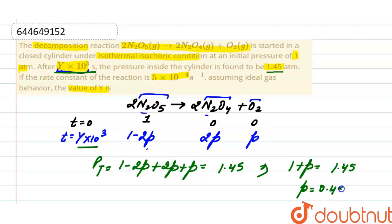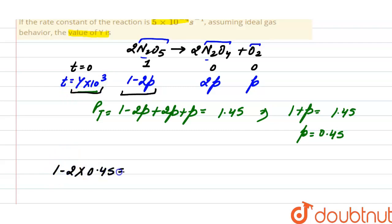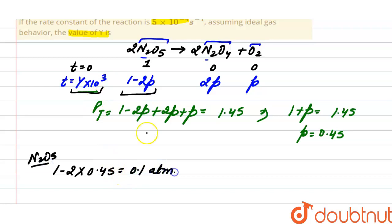Putting the value of p = 0.45 into the expression for the pressure of N₂O₅, we get 1 minus 2 into 0.45, so the pressure of N₂O₅ at this time is 0.1 atmospheric.